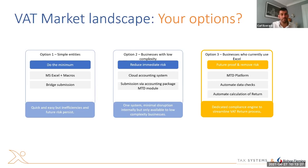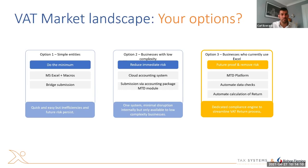What we're finding is a lot of businesses are falling within option three. For one reason or another they're using Excel within their process - either because they've got data from different sources or some complexity within their VAT return. They may be partially exempt, may have various charges, and where they're making adjustments within Excel they're often finding they need to change their process for Phase Two. A lot of businesses in this category are looking to change their process and look at technology solutions to automate some of the manual work.